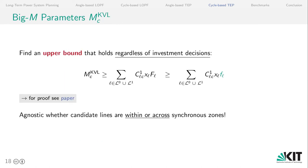So like for the angle-based TEP formulation, we need to calculate big M parameters. In this case only for each candidate cycle and not for each line. We want to find an upper bound that holds regardless of the investment decisions. We can use the maximum capacity of all lines to find an upper bound for the cycle-based Kirchhoff voltage law. So we substitute the variable f_l by their capacity and this calculation of big M parameters is agnostic to whether the candidate lines are within or across synchronous zones. So this is a big advantage of the cycle-based formulation over the angle-based formulation. So in summary, it is much easier for the cycle-based formulation to consider the connection of multiple synchronous zones where the angle-based transmission expansion formulation struggles.